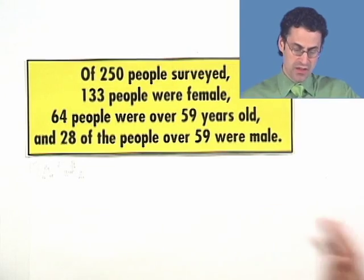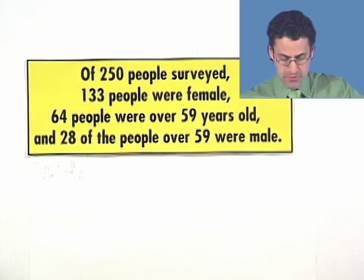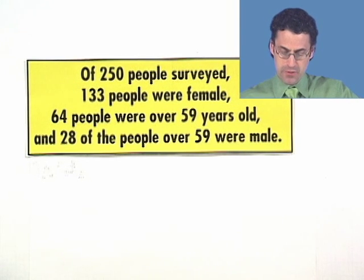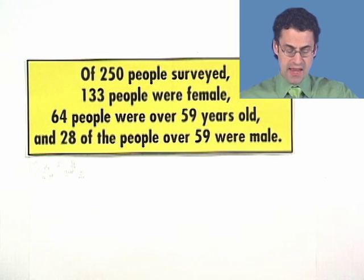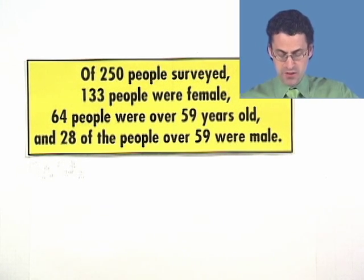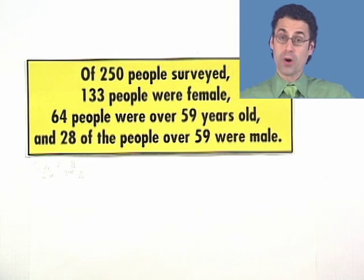All right, let's take a look at another example where we have this sort of inclusive probability at hand. So, of 250 people surveyed, 133 people were female, 64 people were over 59 years old, and 28 of the people over 59 years old were male.